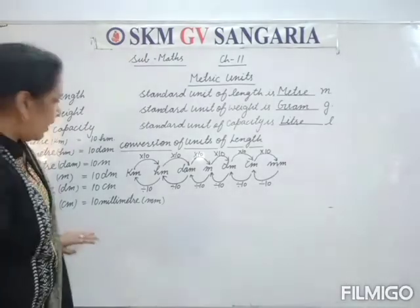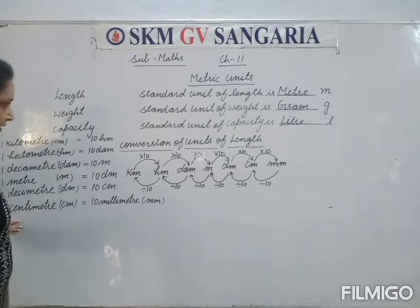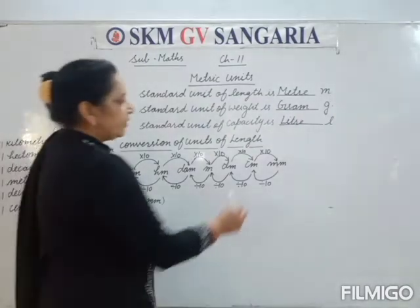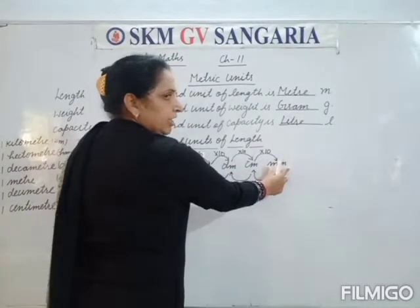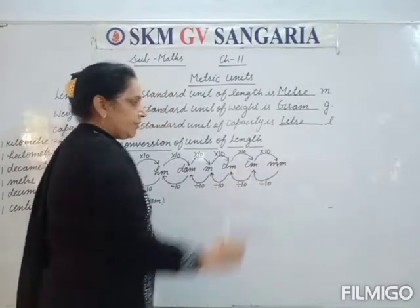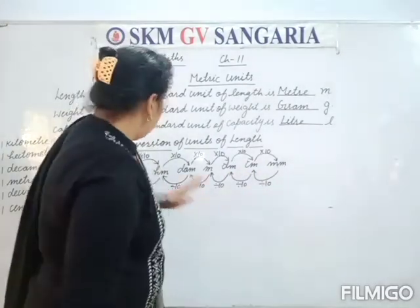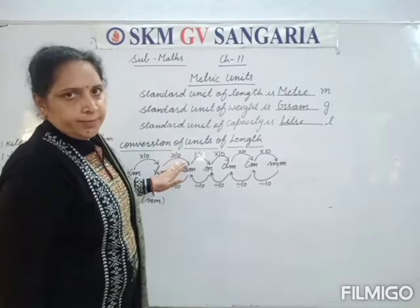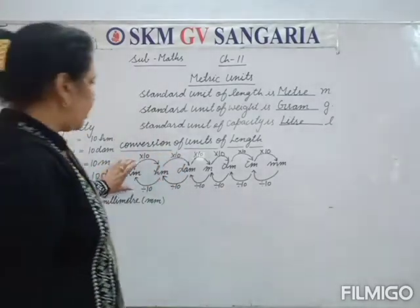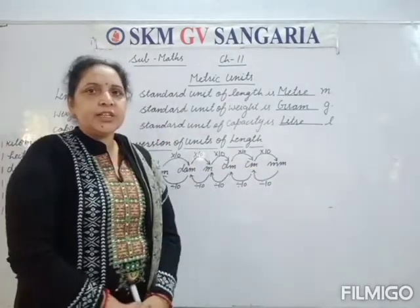So if you have to convert 10 millimeters to centimeters, you divide by 10. To convert a lower unit to a higher unit, you divide by 10.